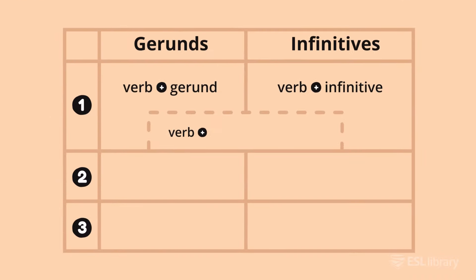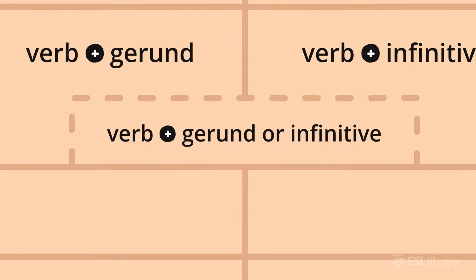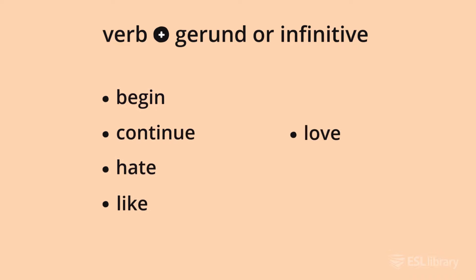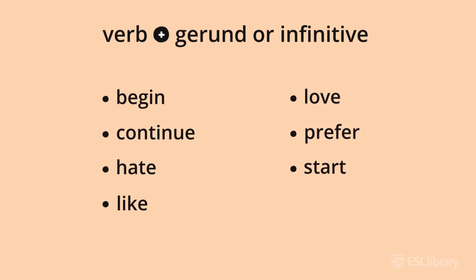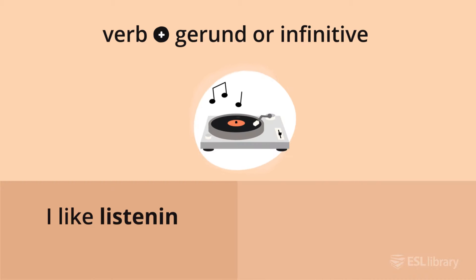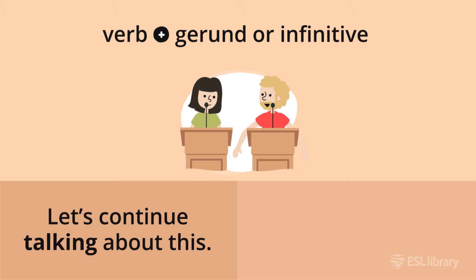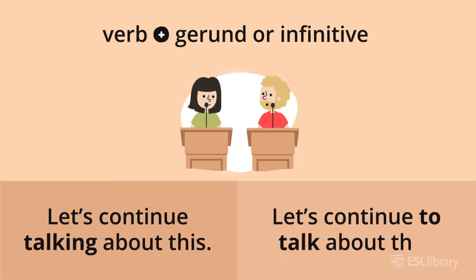There are a few verbs that can be followed by either a gerund or an infinitive with no difference in meaning. Common verbs followed by either are begin, continue, hate, like, love, prefer, and start. For example, 'I like listening to music' or 'I like to listen to music.' Also, 'let's continue talking about this' or 'let's continue to talk about this.'